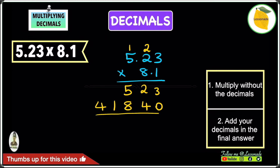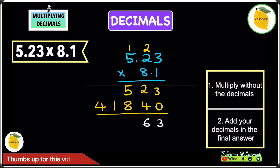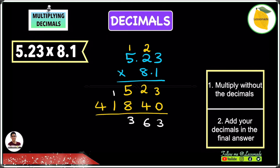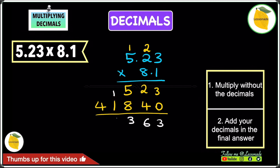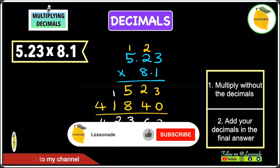Now we can add these numbers up. 3 plus 0 is 3. Then 2 plus 4 is 6. 5 plus 8 is 13 — write the 3 and take the 1 as a carry. 1 plus 1 is 2. And 4 plus nothing remains as 4. So our final answer is 42363.